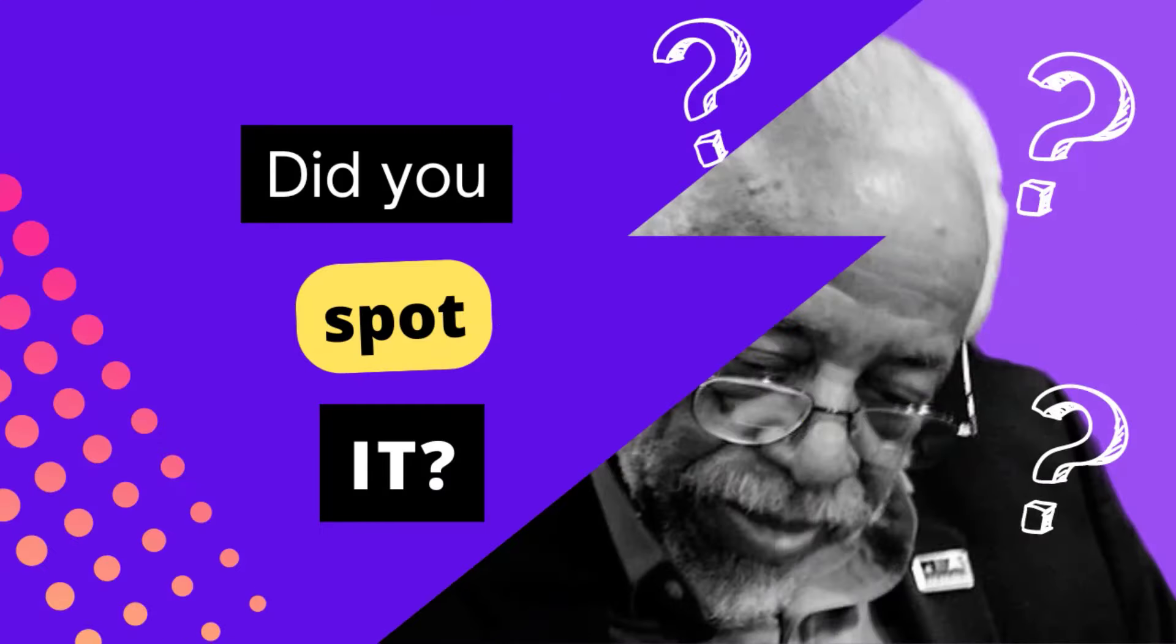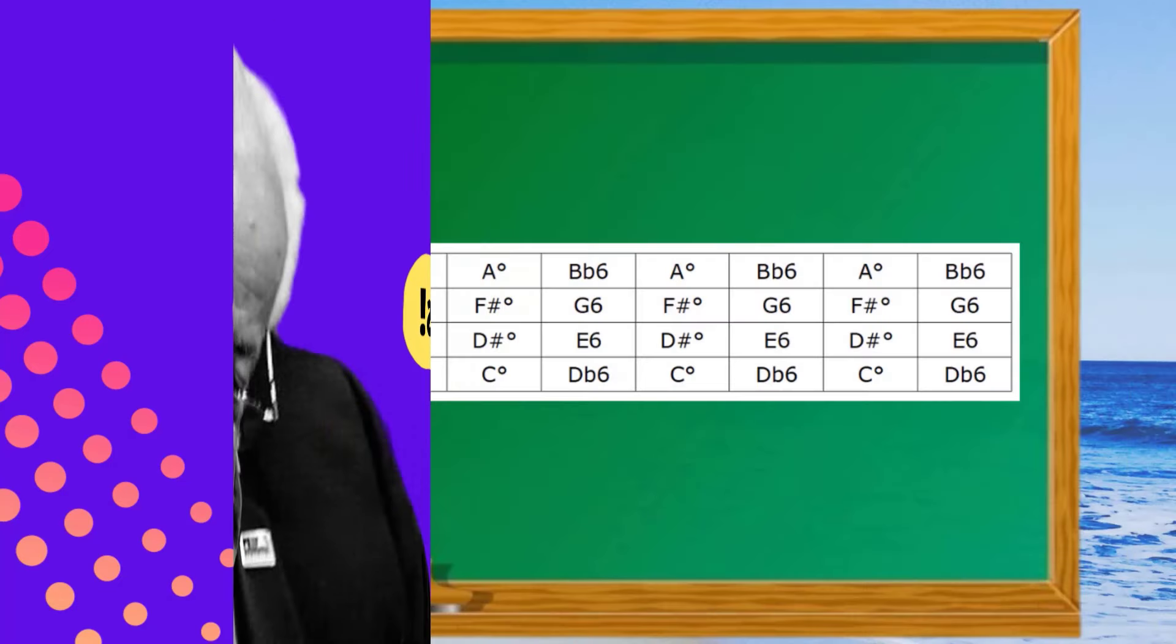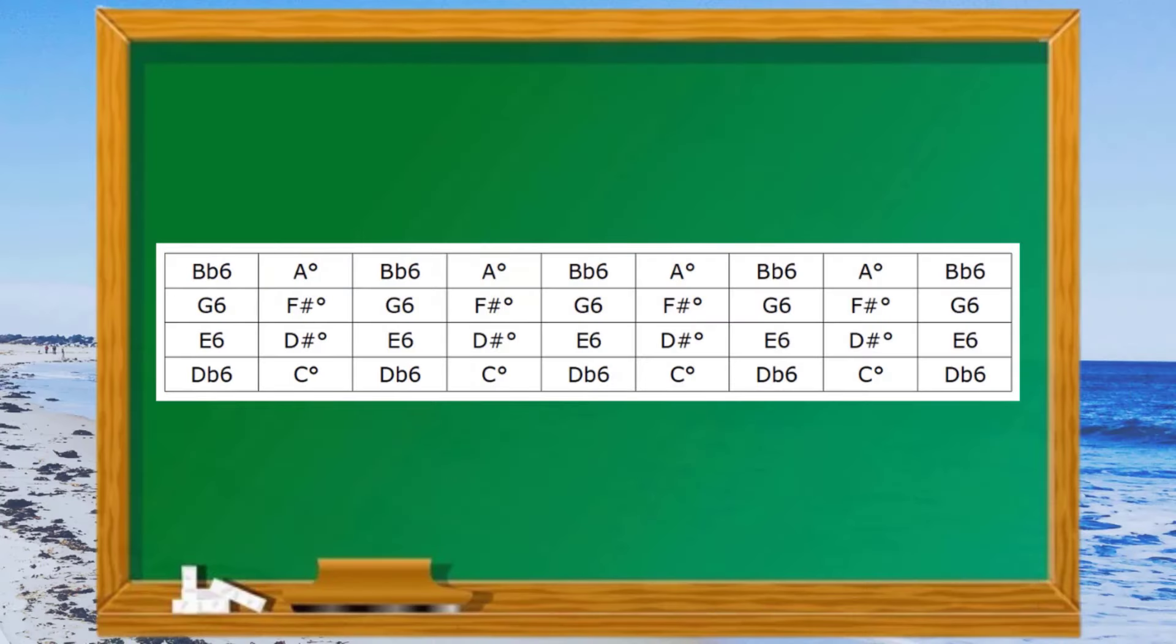Did you spot the all-important clue? Well not to worry if you didn't. I'm going to take you step by step through the type of thinking process that we need to have to unlock the door to this wonderful world of harmonic beauty and freedom. On the screen you'll see a chart that is a review of all the scales and their related harmonies that we've just played.